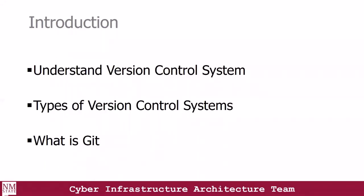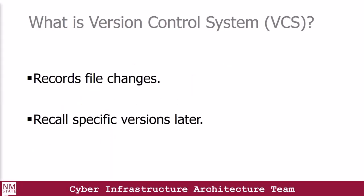For this section, we'll try to understand what a version control system is, then we'll look at several types of version control systems and what Git is. So what is a version control system? A version control system is a software tool that helps the software team manage changes to source code over time.